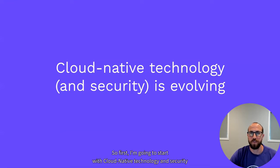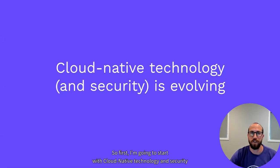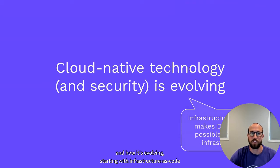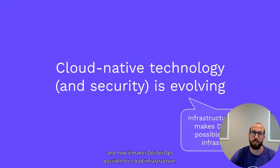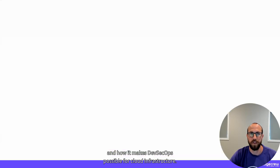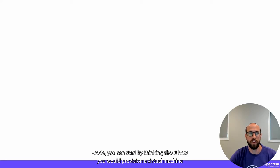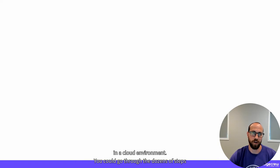I'm going to start with cloud native technology and security and how it's evolving, starting with infrastructure as code and how it makes DevSecOps possible for cloud infrastructure. If you've never heard of infrastructure as code, you can start by thinking about how you would provision a virtual machine in a cloud environment.